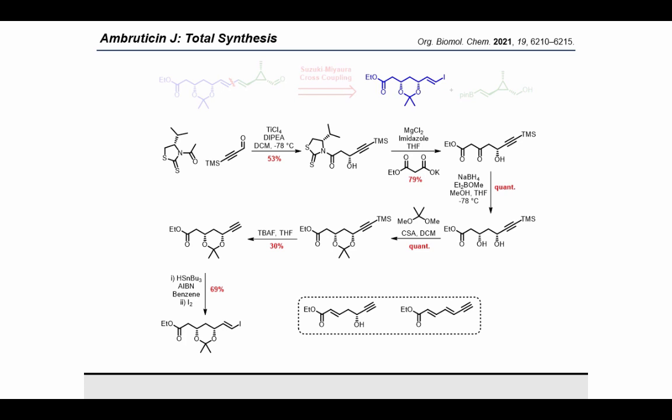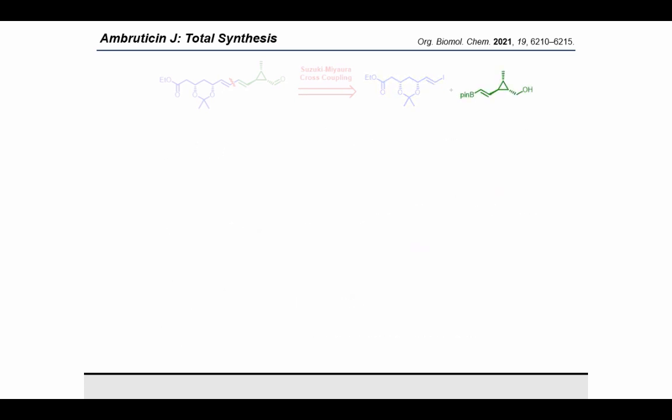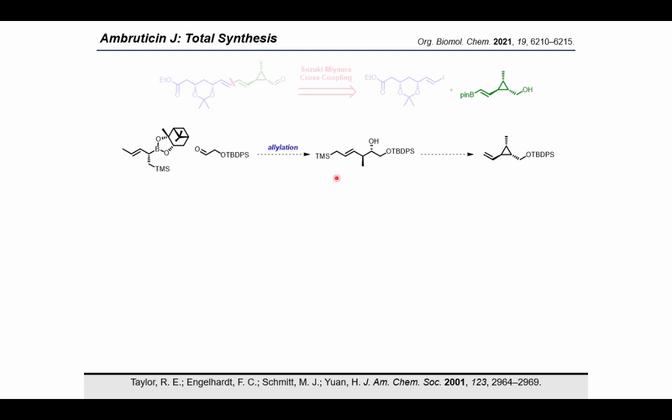With the vinyl iodide in hand, we turned our attention to the arguably more interesting cyclopropane. To construct the cyclopropane fragment, we opted to utilize some methodology developed by Taylor in Notre Dame, where homoallylic alcohols such as these were activated by triflic anhydride to form the desired cyclopropanes. We therefore required this homoallylic alcohol, which we proposed could be synthesized by an asymmetric allylation between this chiral allyl boronate and this aldehyde.